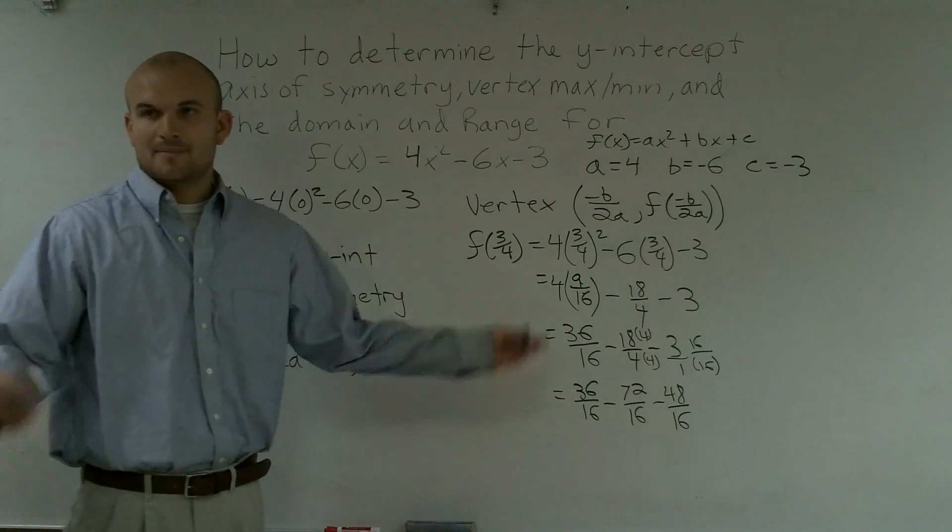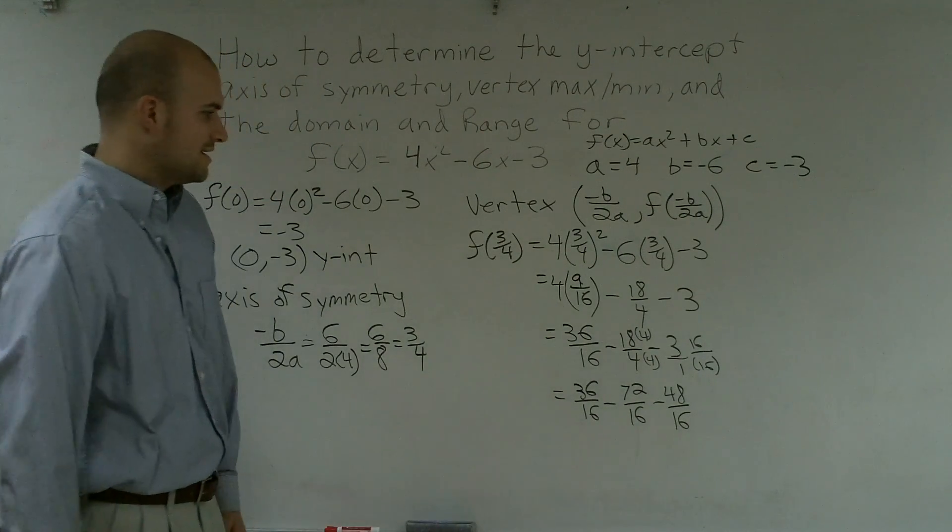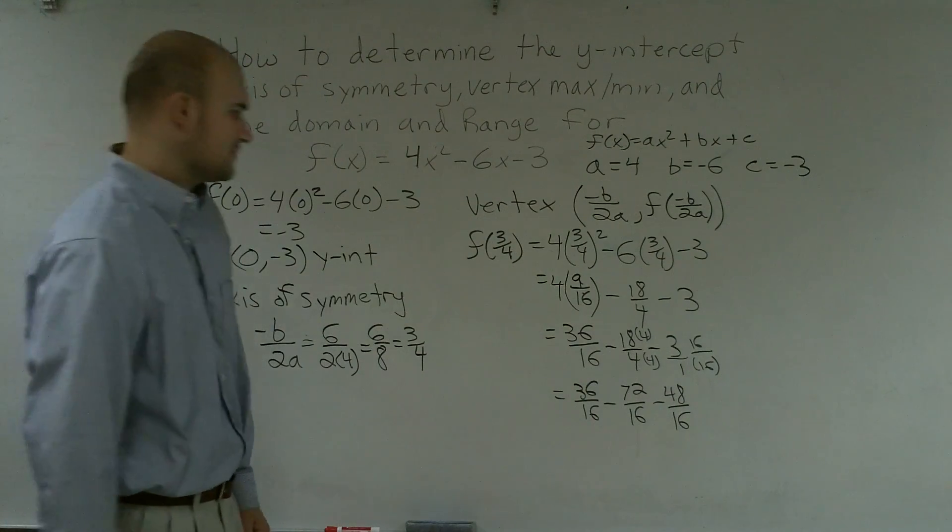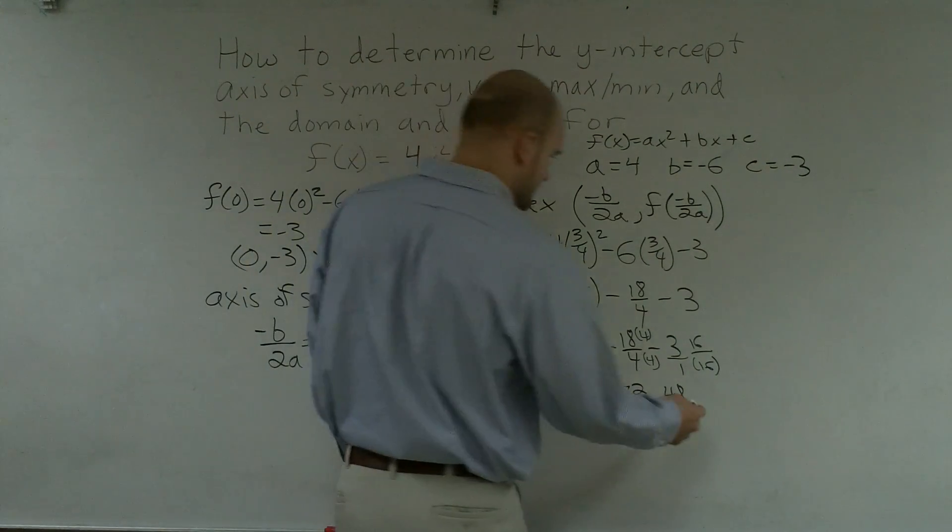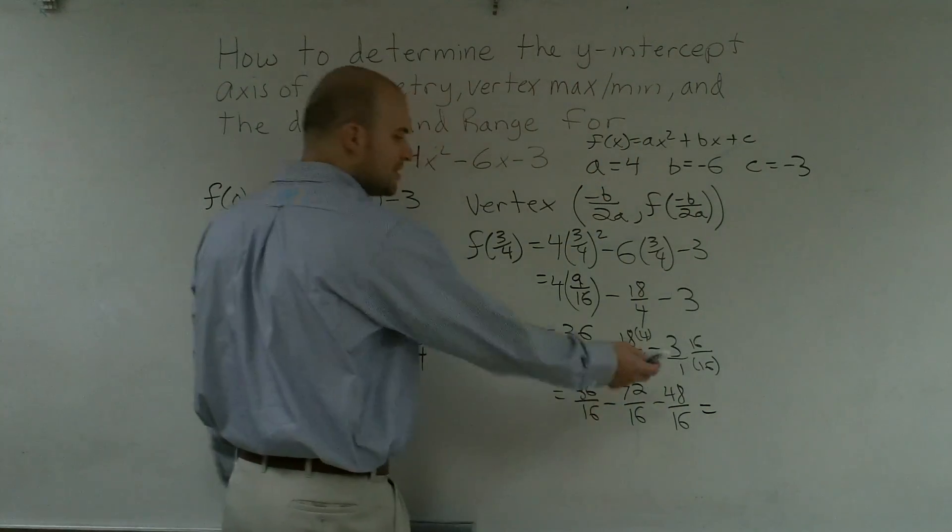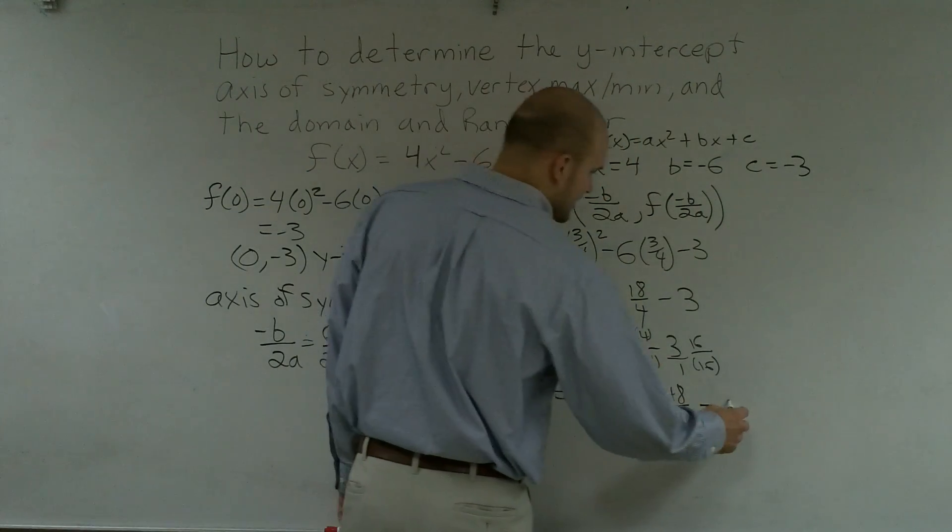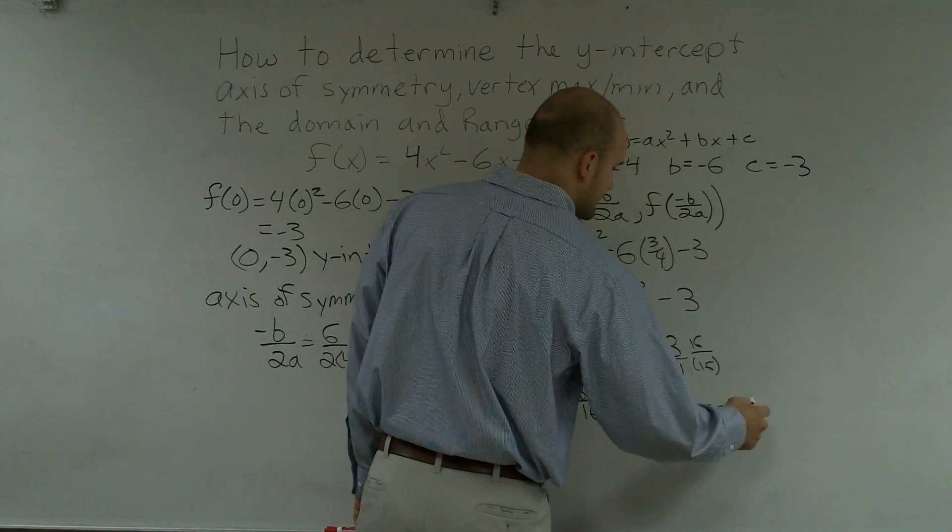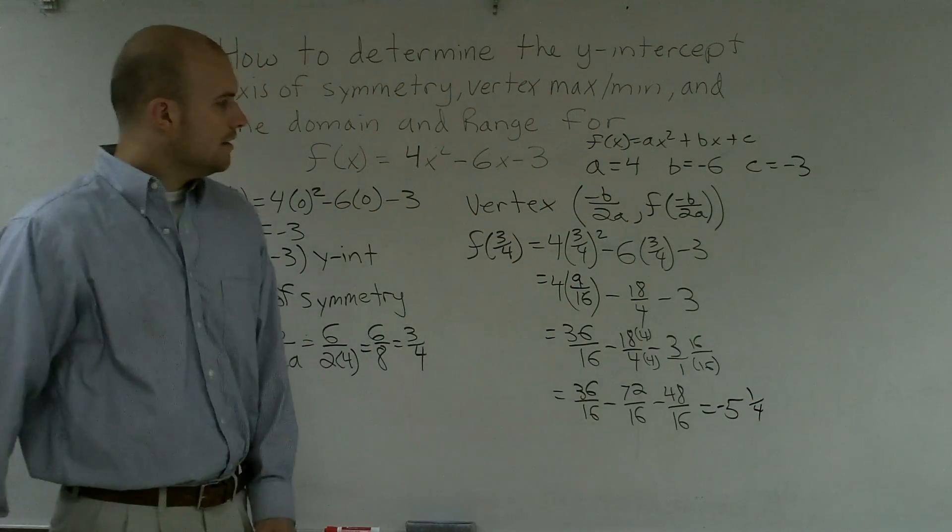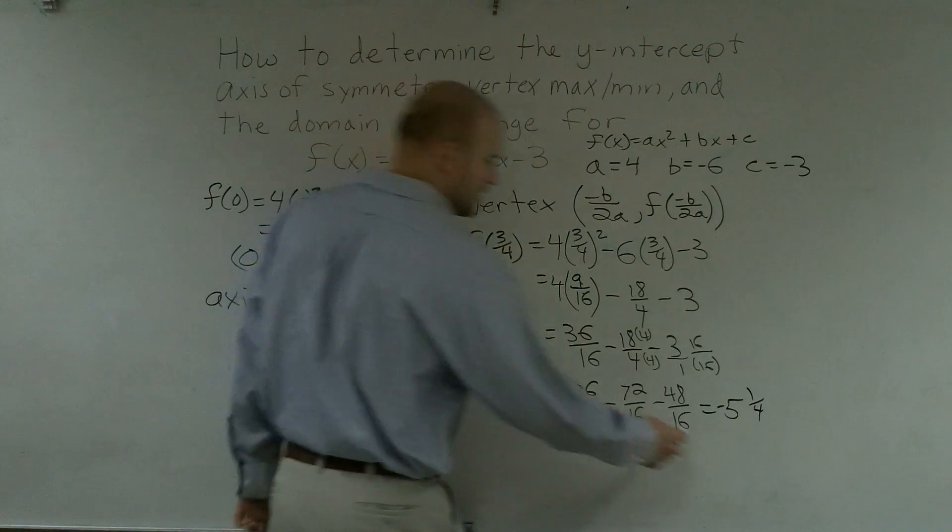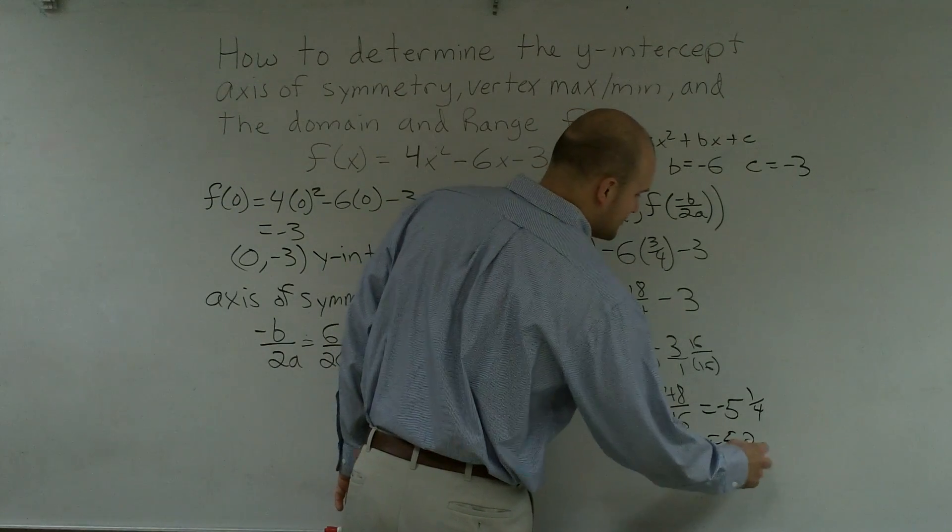And then we got minus 48 over 16. Alright, and I'm not just going to go and figure out the math, but I think you get, what was your final decimal, 5 and a quarter was it? Negative, negative 5 and a quarter. Negative 5 and a quarter. Okay. So you guys can go and check your math, go ahead and do that, and you get -5.25. So we're just going to leave that in decimal form, 5.25.